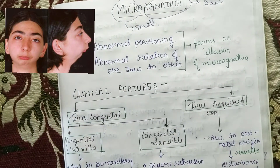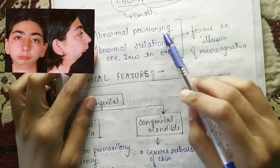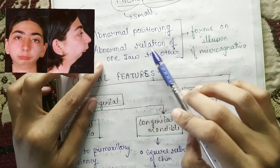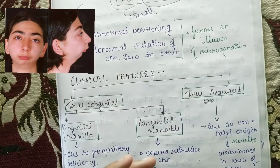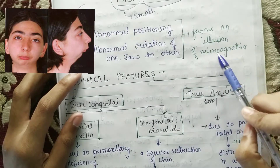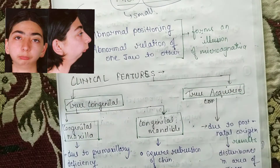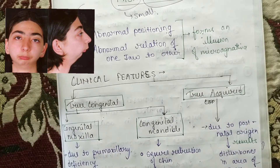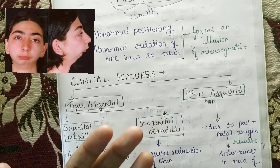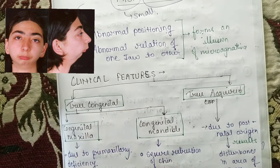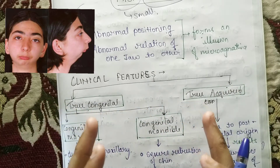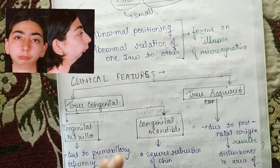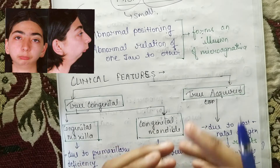What happens is there is an abnormal positioning and abnormal relation of one jaw to the other, which forms an illusion of micrognathia. For example, if your maxilla is bigger, then the mandible will obviously appear small, but it is actually normal size — so that forms an illusion of micrognathia.